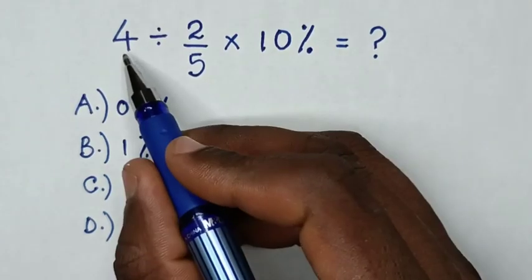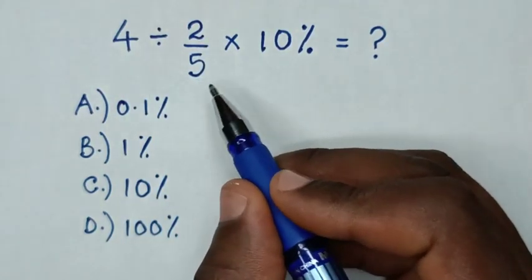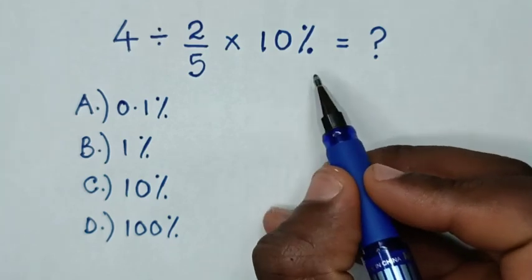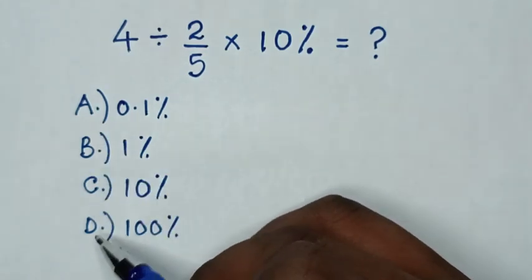Hello! How to solve 4 divided by 2 over 5 times 10% by selecting between the answers in A, B, C, or D.